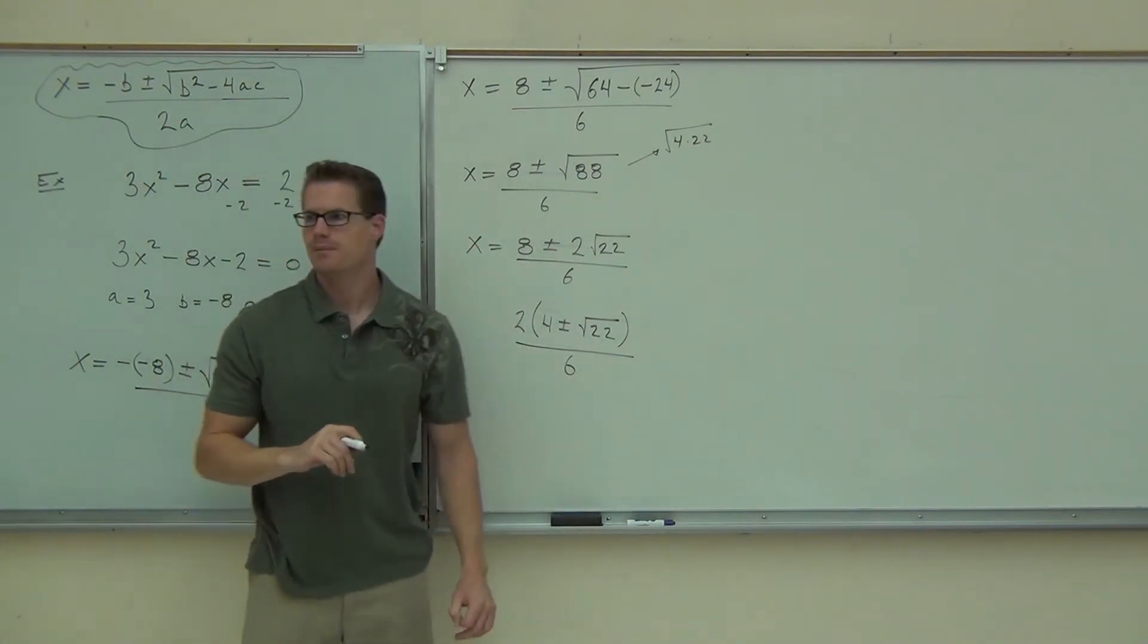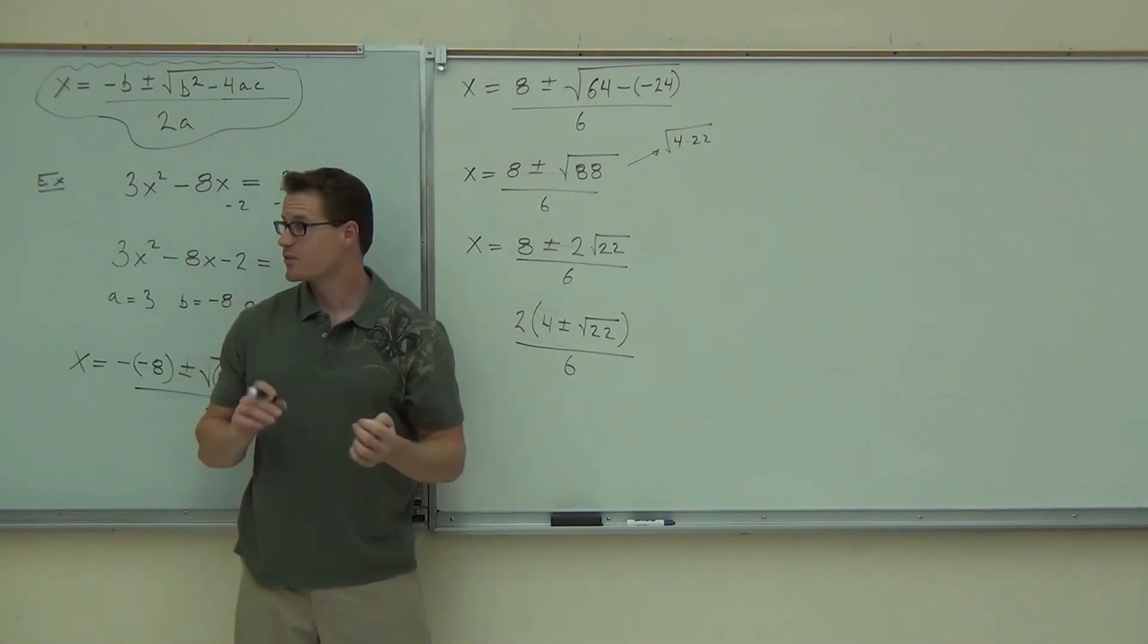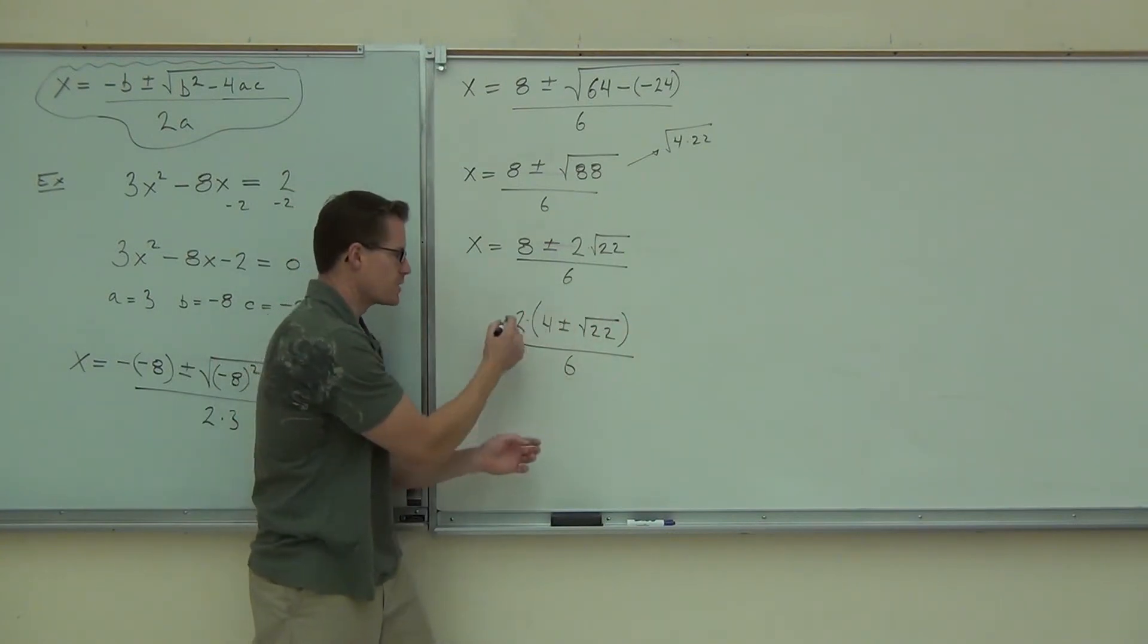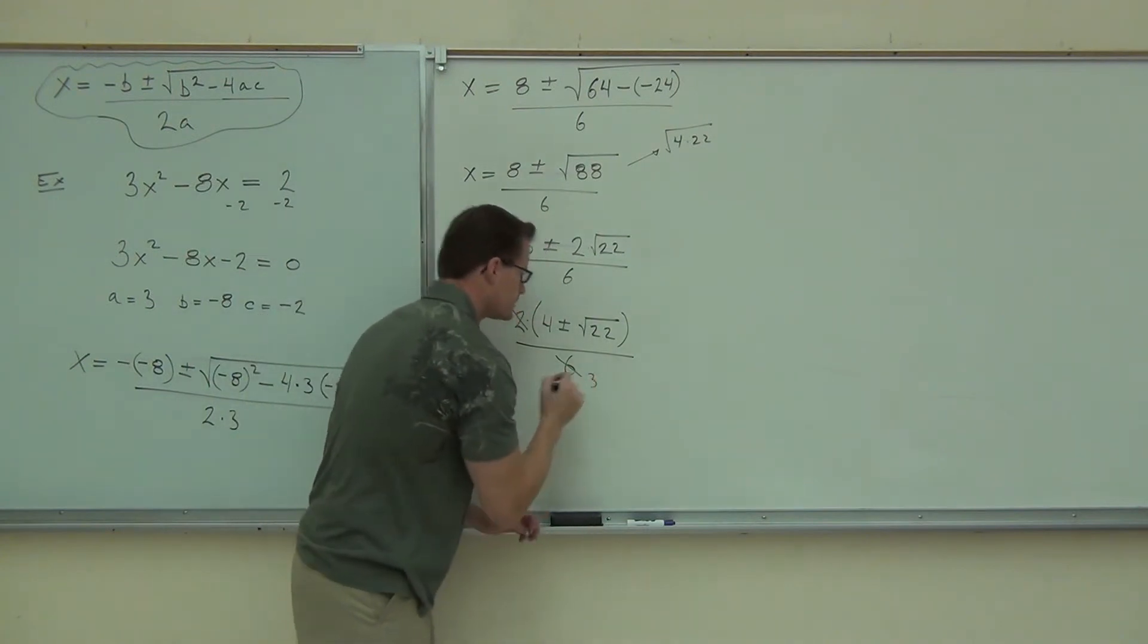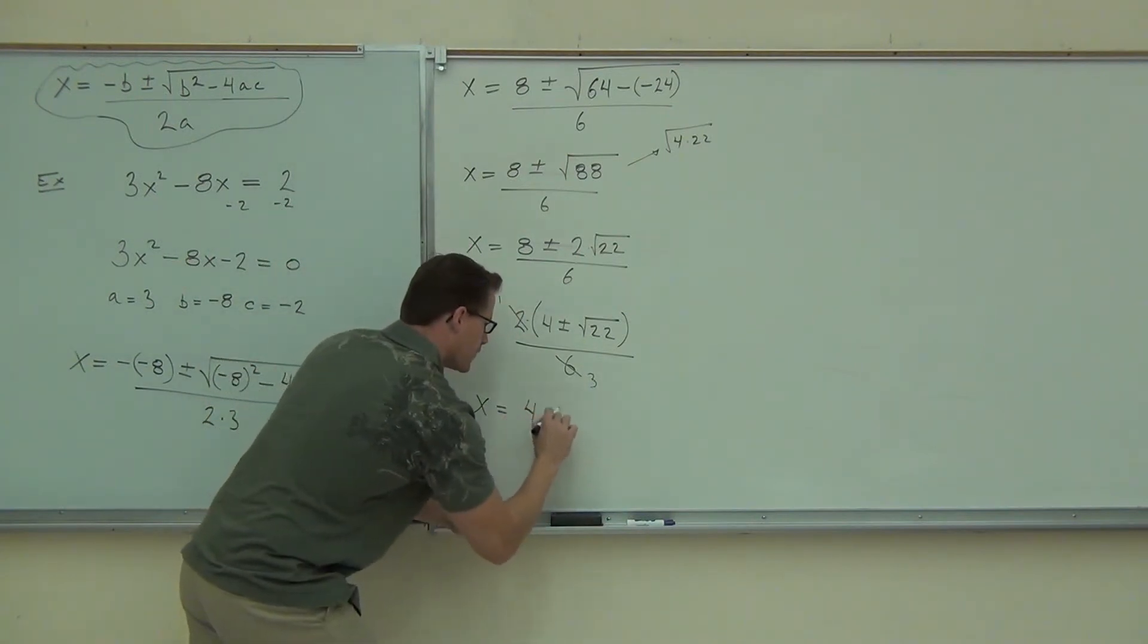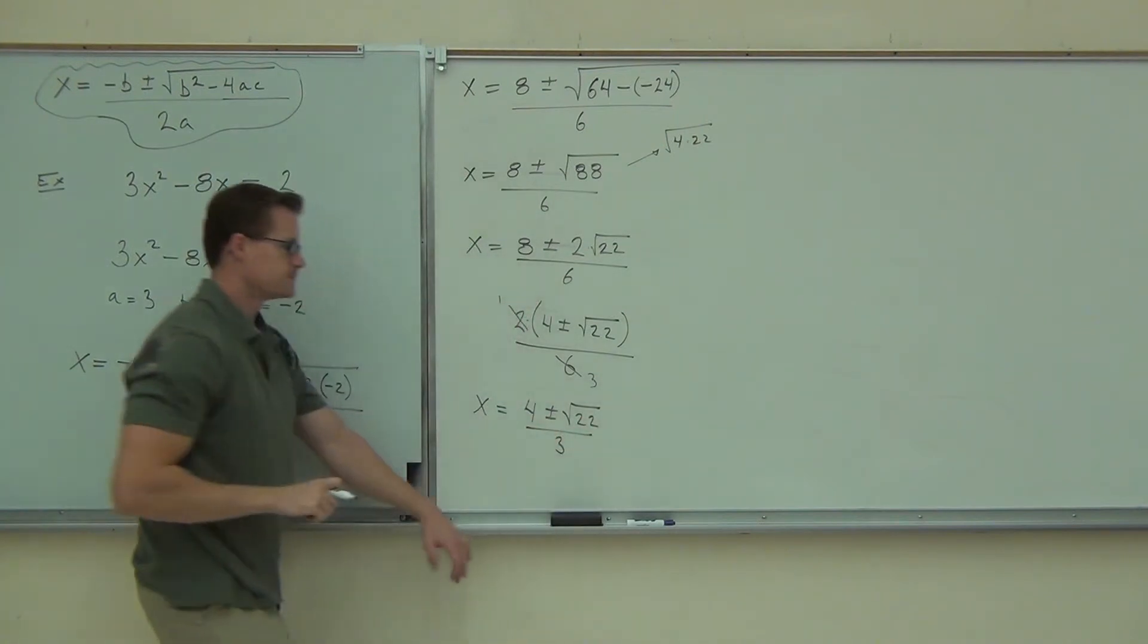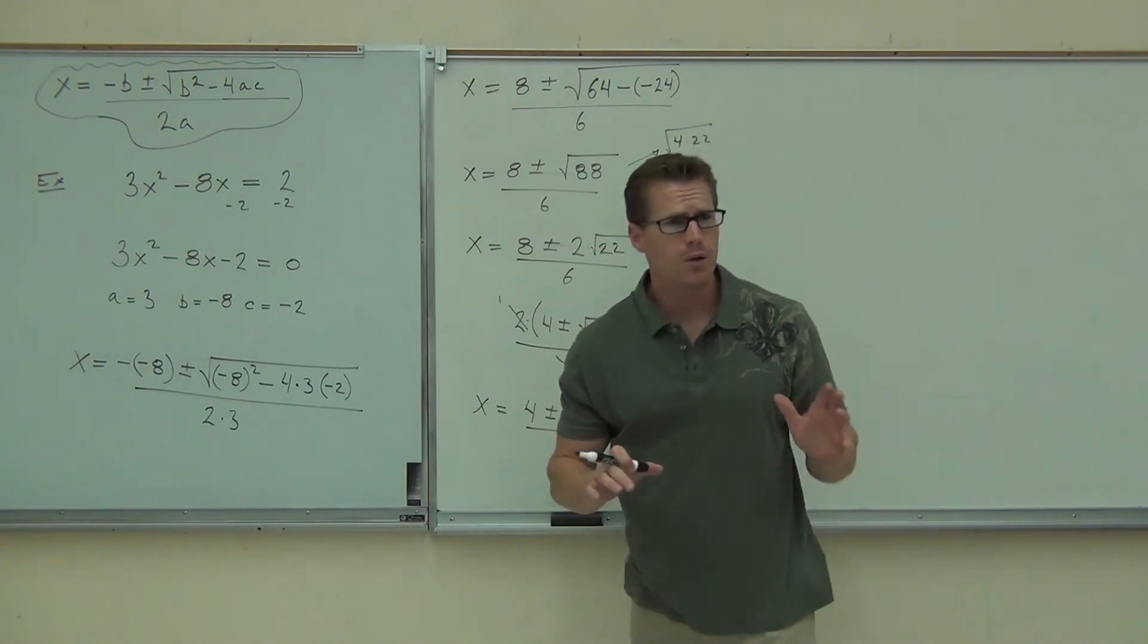Hey, hey, look it. Can you simplify this now? Yes. Absolutely. So when I simplify this, this is 2 times this whole expression. I can simplify 2 times something. That becomes a 1. This becomes a how much? So x equals, the 1 doesn't do much. I have 4 plus or minus the square root of 22 over 3. I am almost done. Almost done. Do I have 2 solutions? No.